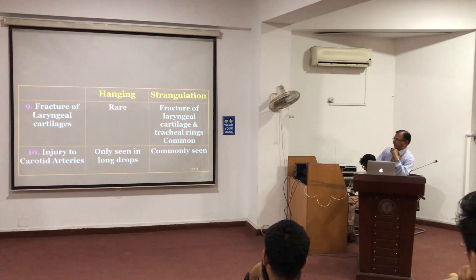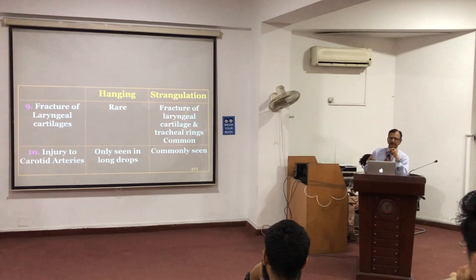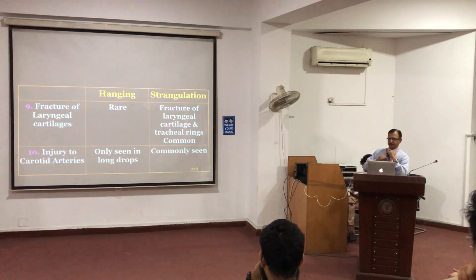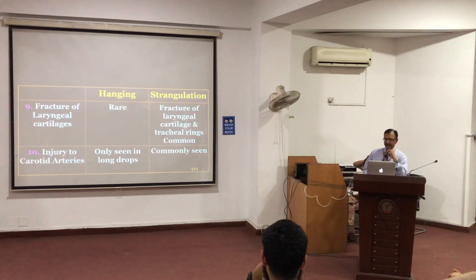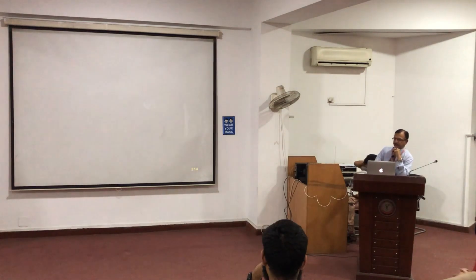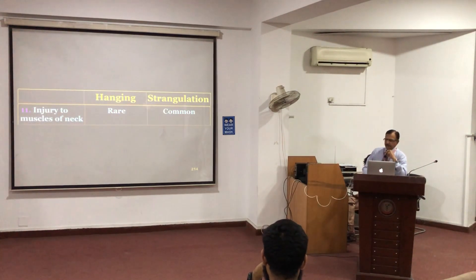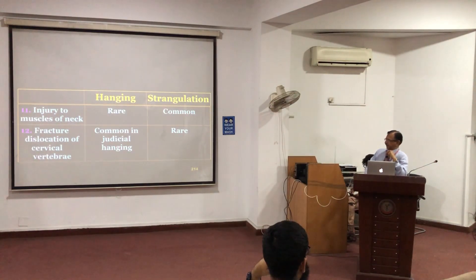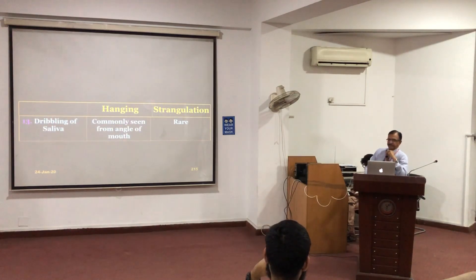Regarding injury to the carotid arteries: in hanging with a drop, there is a transverse tear in the intima of the carotid vessel, whereas in strangulation there is ecchymosis at the level of the carotid due to direct pressure, not a transverse tear. Regarding injury to the muscles: it is rare in hanging but common in strangulation. Fracture dislocation of the vertebra occurs in judicial hanging but is rare in strangulation.